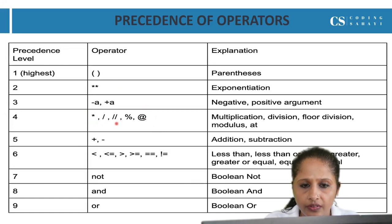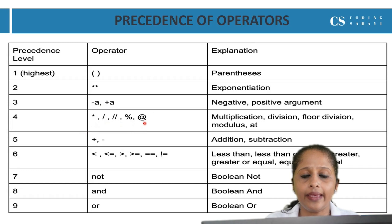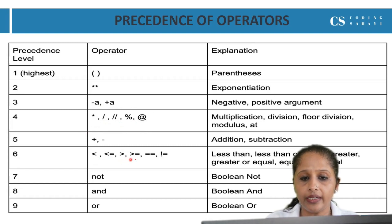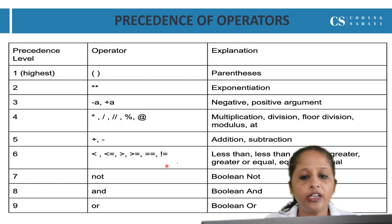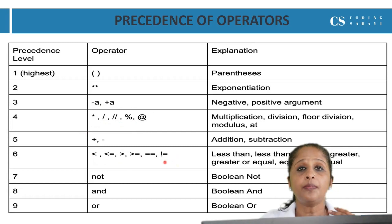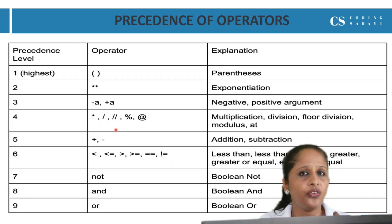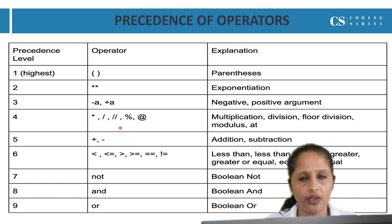Multiplication, division, floor division, modulus and at — these operators have the same precedence. Similarly, less than, less than or equal to, greater than, greater than or equal to, equal to, not equal to — all these operators also have the same precedence. Suppose multiplication, division, and floor division come together in an expression — which one will be executed first? In that case, we follow the rule of associativity.